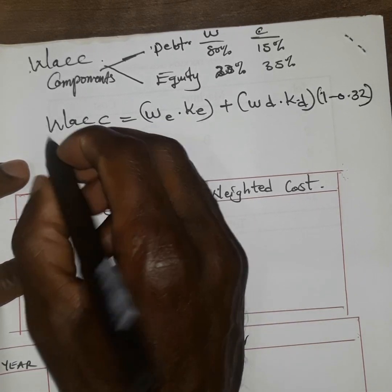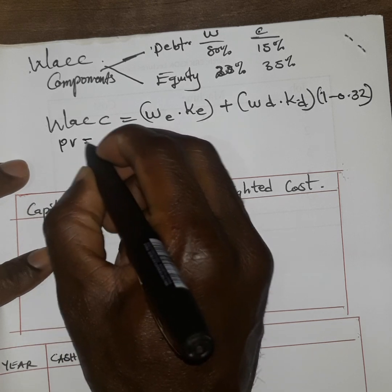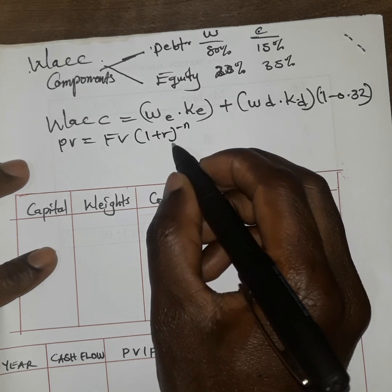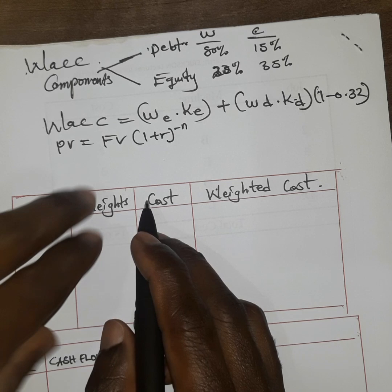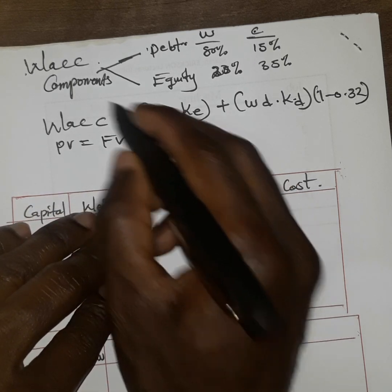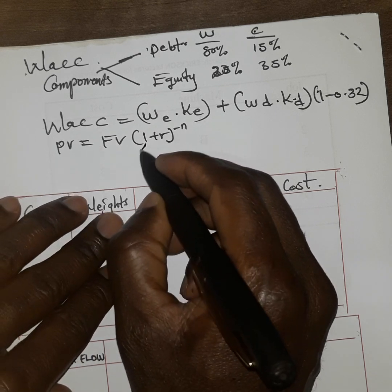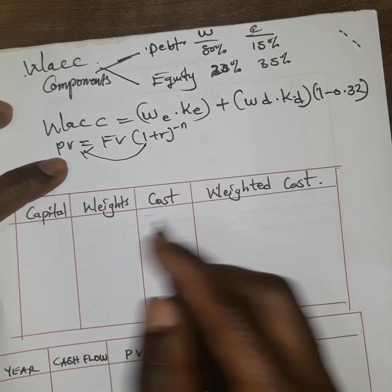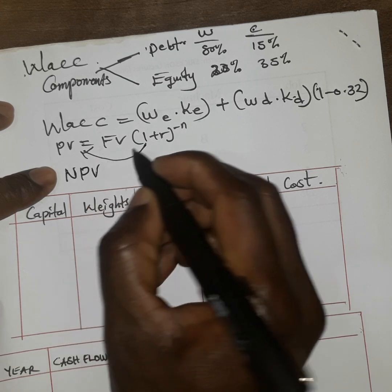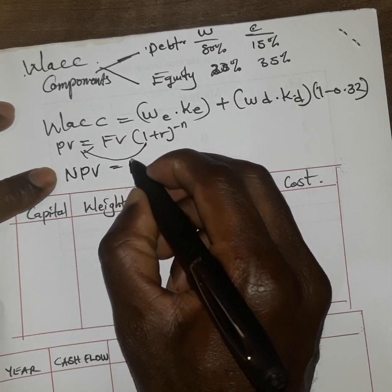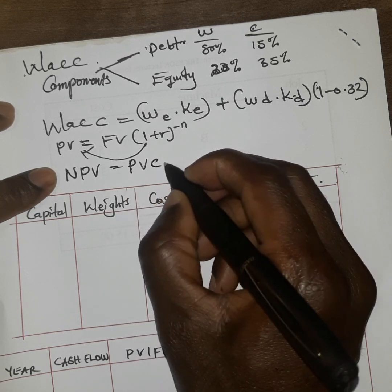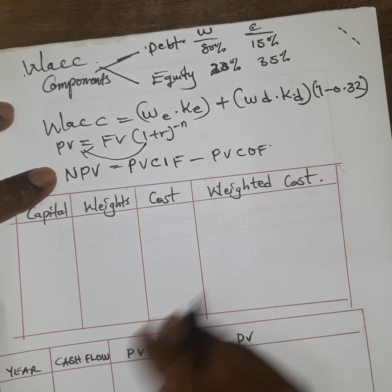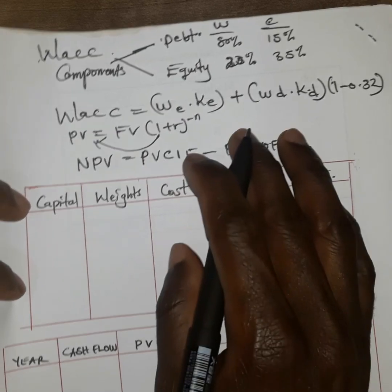NPV refers to future values discounted back to present values by a discounting factor. In this case we use the WACC value since there is no required rate of return provided. When we discount them back we get present values, and NPV is essentially the difference: present value of cash inflows minus present value of cash outflows.